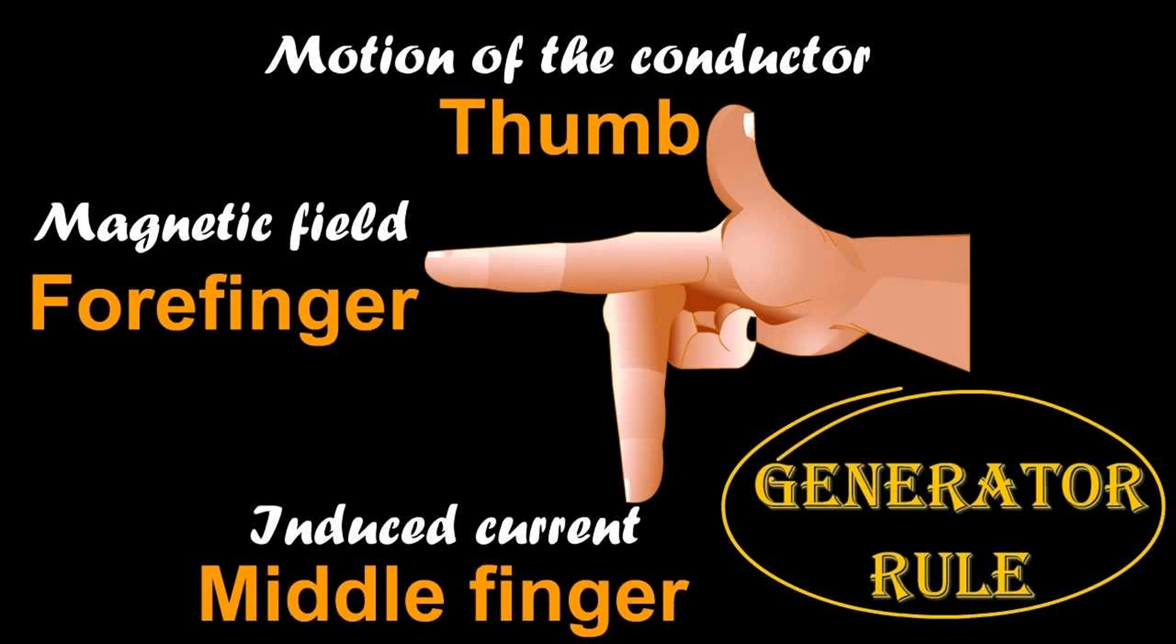It can be used to determine the direction of current in a generator's windings. When a conductor such as a wire attached to a circuit moves through a magnetic field, an electric current is induced in the wire due to Faraday's law of induction.